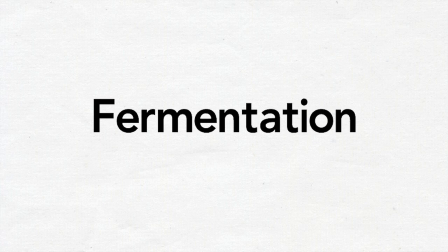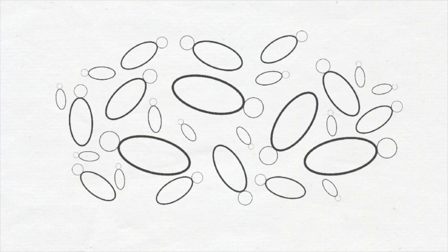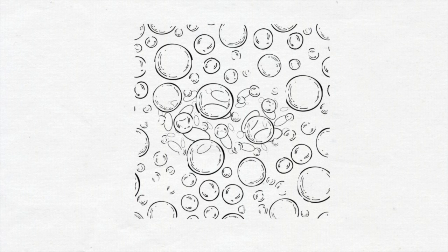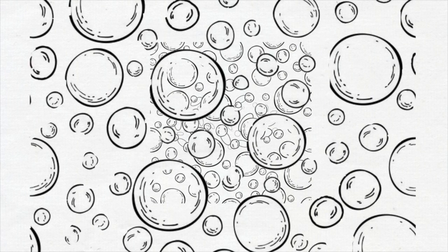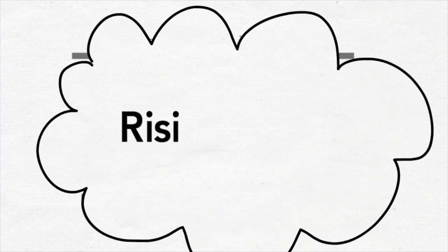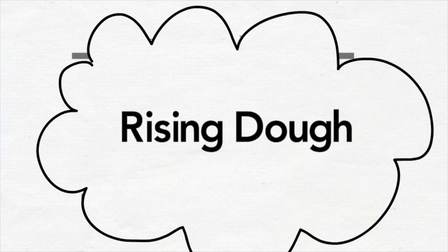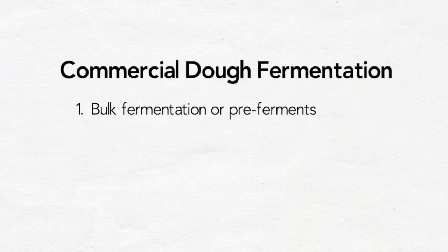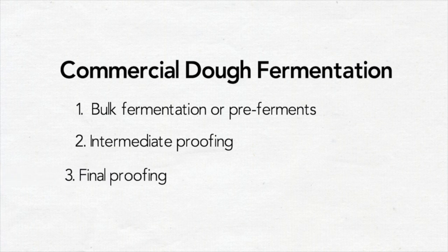Today's show is about dough fermentation — why, what, and how. Fermentation in baking is a process by which yeasted dough rises, developing volume and flavor. It occurs when the yeast or bacteria, like the ones in sourdough, converts sugars like sucrose, fructose, glucose, and maltose present in the flour into carbon dioxide and ethyl alcohol. Together with a well-developed dough, carbon dioxide is trapped within the gluten network, causing the dough to rise. Fermentation produces the leavening action which results in the light and airy crumb in bread products. Commercial dough fermentation may include bulk fermentation or pre-ferments, intermediate proofing, final proofing, and oven spring.